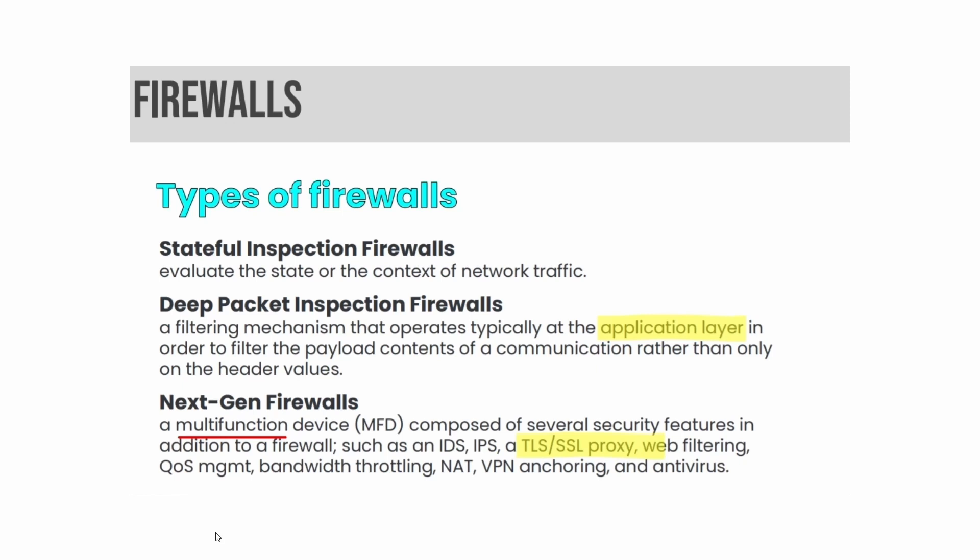Other types of firewalls include stateful inspection firewalls, deep packet inspection firewalls, and next-generation firewalls. Stateful inspection firewalls evaluate the state or context of network traffic. Deep packet inspection firewalls operate typically at the application layer to filter the payload contents of a communication rather than only the header values. Next-generation firewalls are multi-function devices composed of several security features including IDS, IPS, TLS/SSL proxies, web filtering, QoS management, bandwidth throttling, NAT, VPN anchoring, and antivirus.